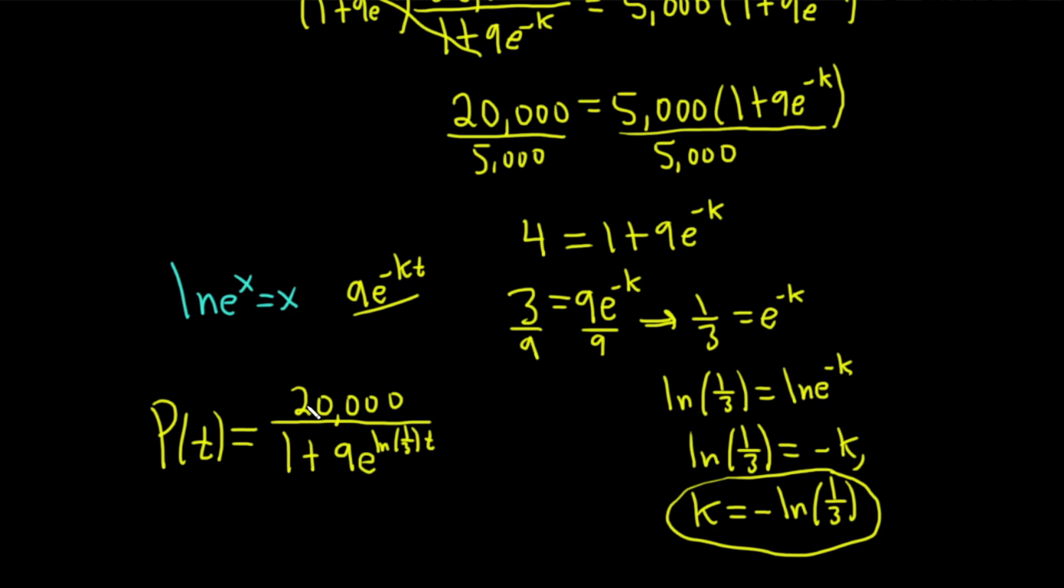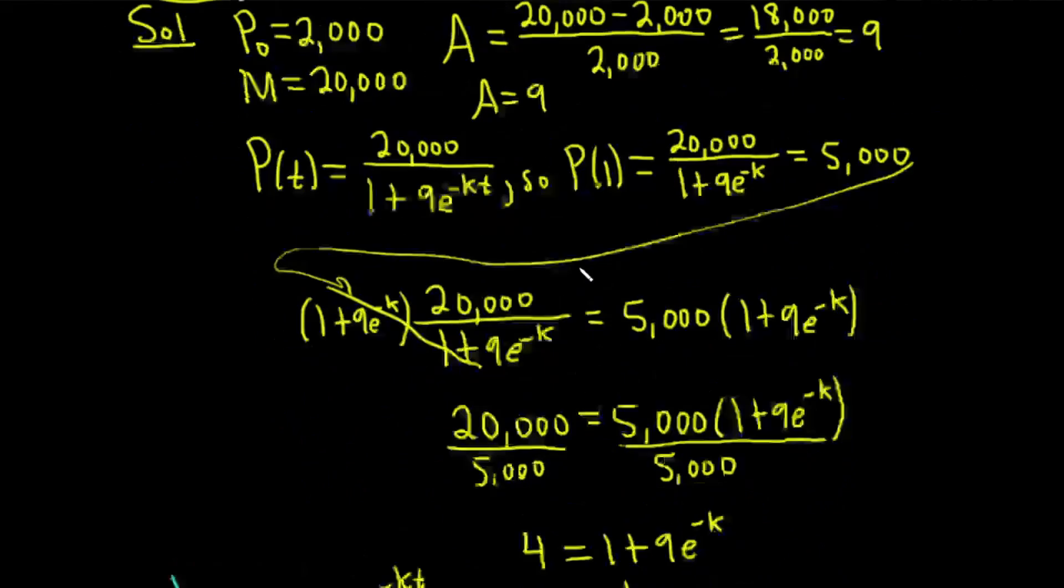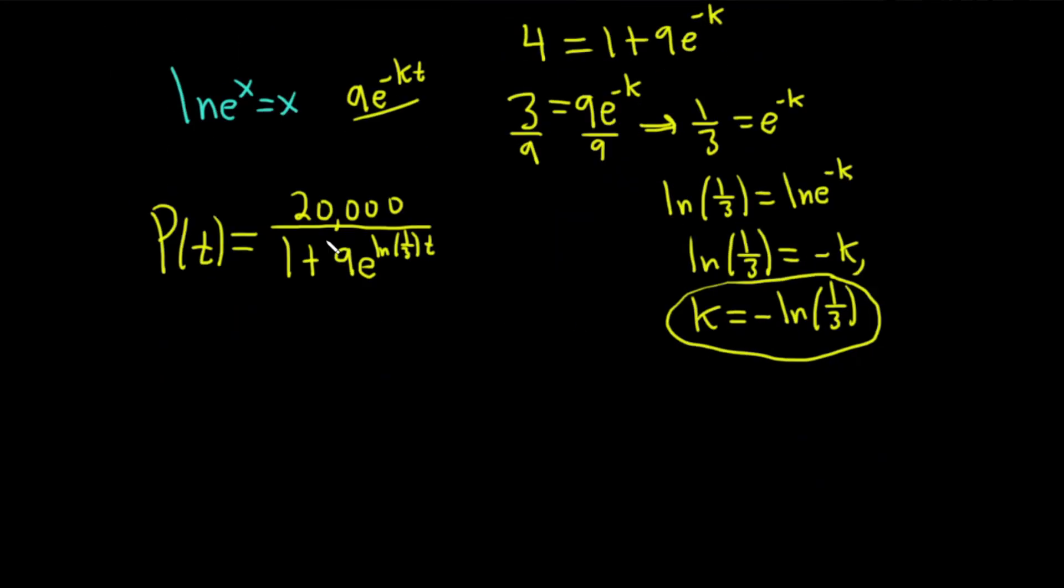The question asked what will the population be after another four years, so it's going to be P(5). P(5) equals 20,000 over (1 plus 9e to the natural log of 1/3 times 5).